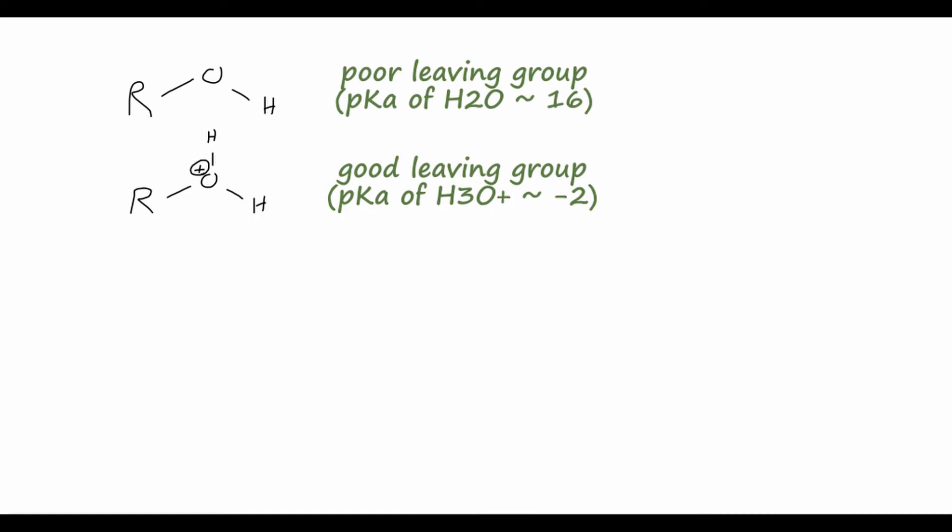So how do we protonate these alcohols? Well, let's start with ethanol, a very simple alcohol here. And if we treat this with some aqueous hydrobromic acid, HBr, the pKa of HBr is actually around -9, so a very strong acid. And this will give us the compound ethyl bromide. So we'll actually substitute this OH for a bromine.